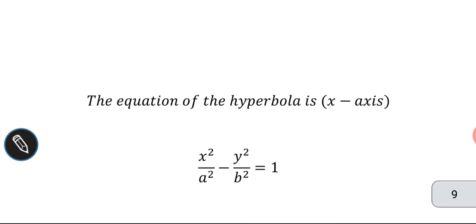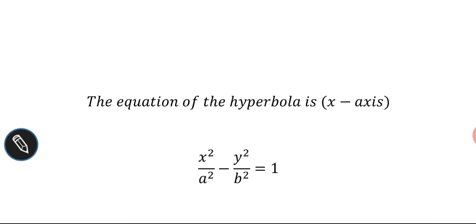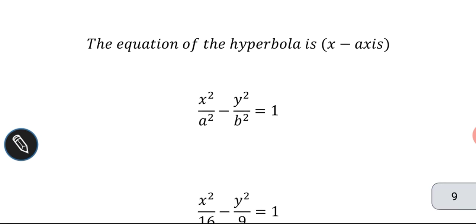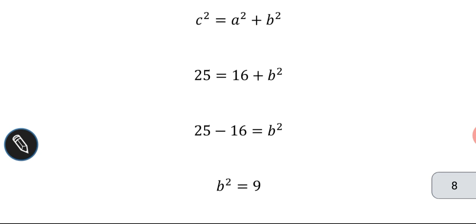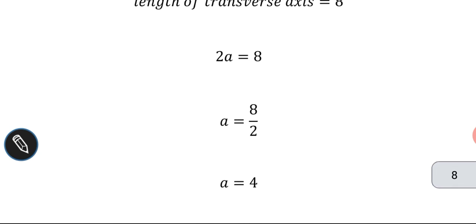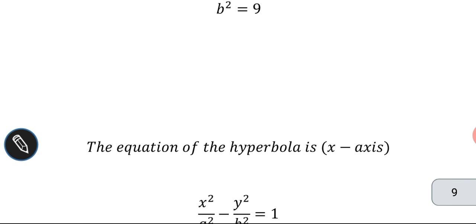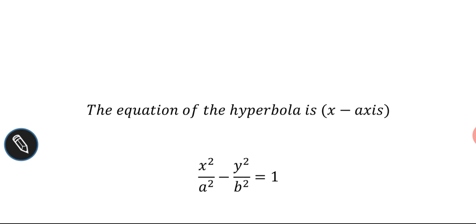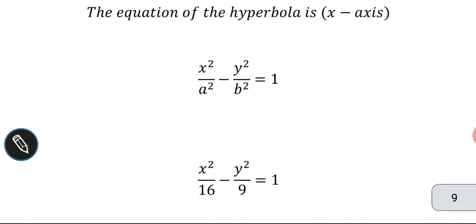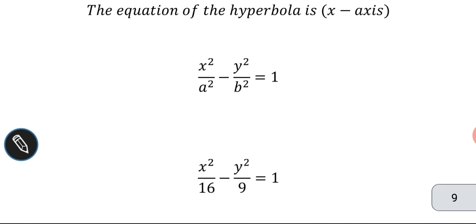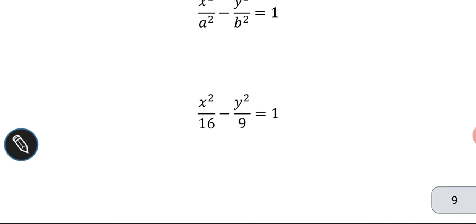Since the axis is the x-axis, the equation of the hyperbola is x squared by a squared minus y squared by b squared equal to 1. Substituting a squared equal to 16 and b squared equal to 9, the equation of the hyperbola is x squared by 16 minus y squared by 9 equal to 1.